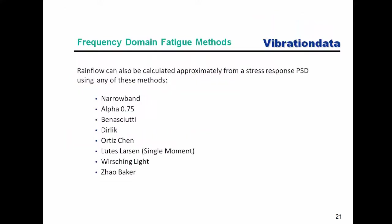Now we'll switch to doing rainflow counting in the frequency domain. Rainfall counting can be approximated via direct calculation from a stress response PSD. There are numerous methods: narrow band, alpha 0.75, Benascuti, Dirlik (very popular), Ortiz-Chen, Lutz-Larson (also called the single moment method), Wirsching-Light, and Tovo-Benasciutti. Dirlik is very popular.